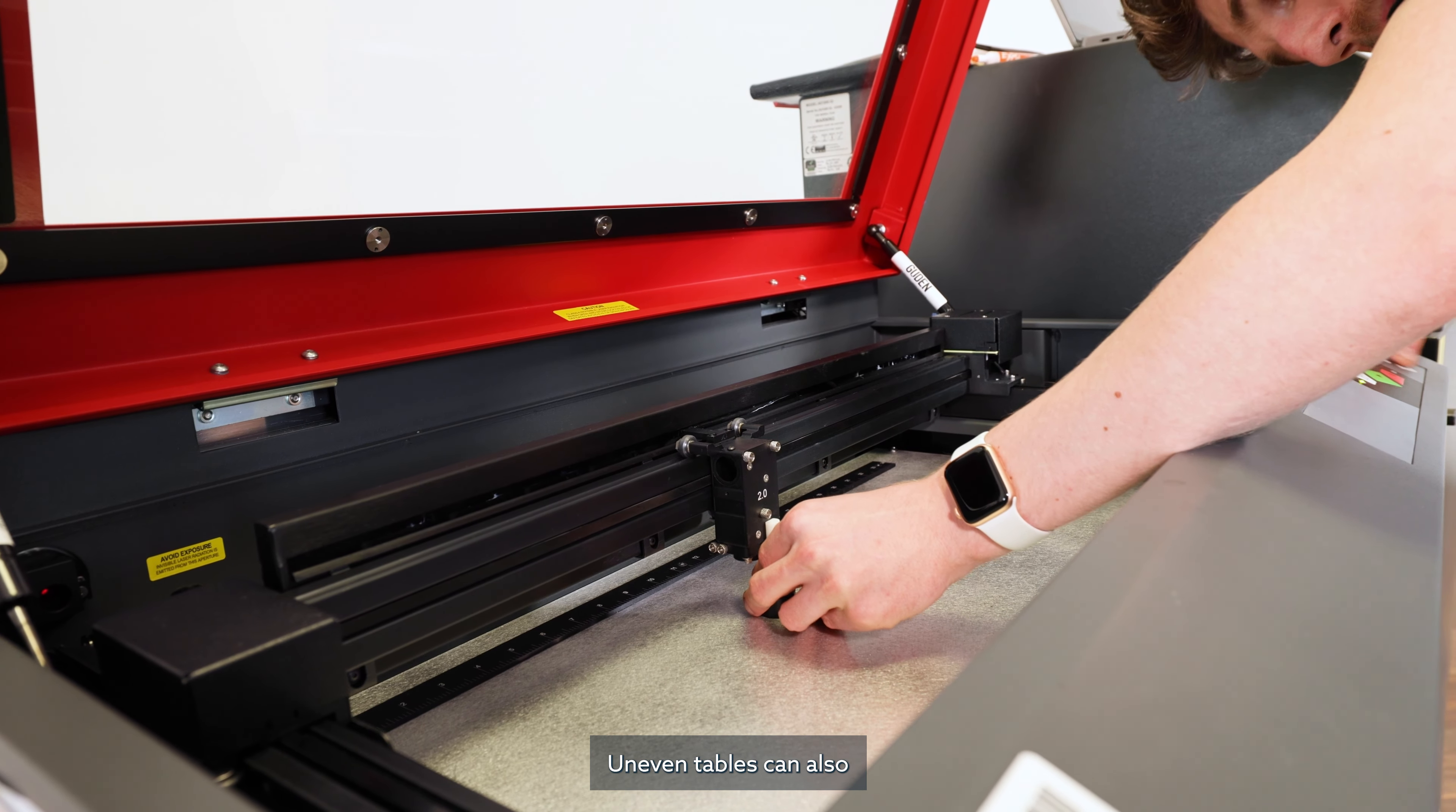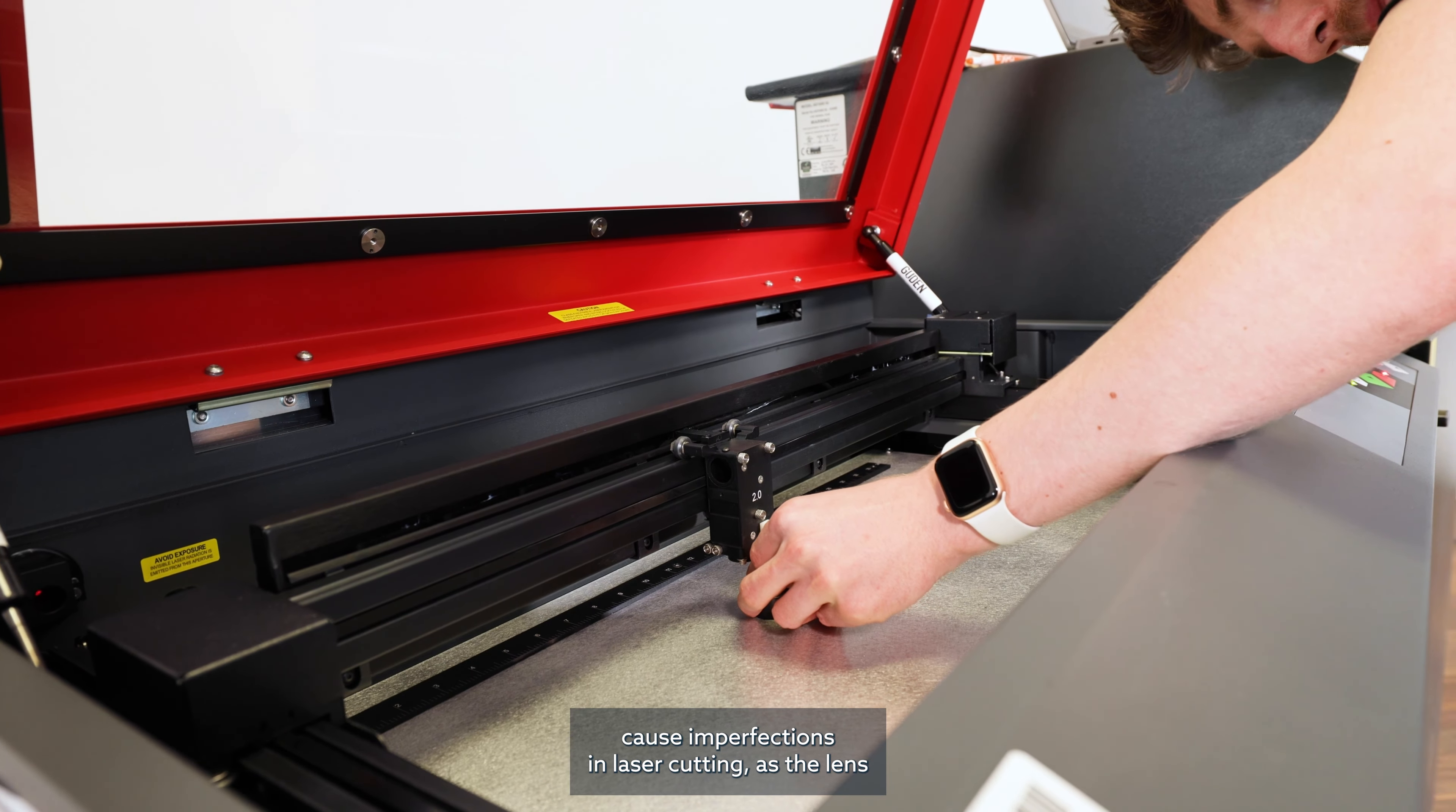Uneven tables can also cause imperfections in laser cutting, as the lens won't properly focus on all the corners of the machine.